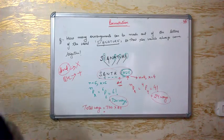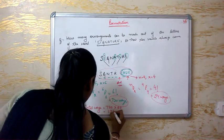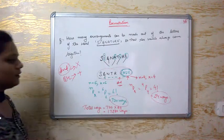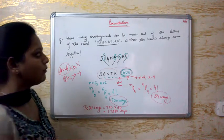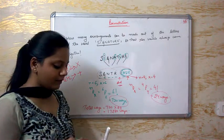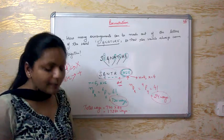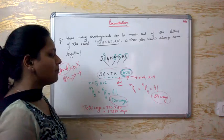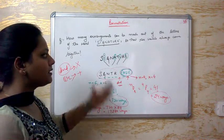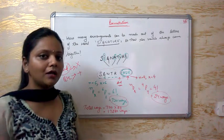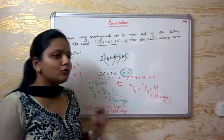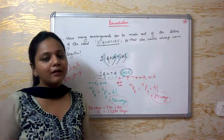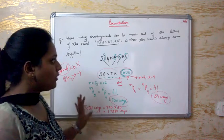So 720 into 24 gives us 17,280 ways. This type of question is very important for your exam. When vowels-together questions come, this is the method — treat vowels as one bundle, then multiply by the internal arrangements of the vowels.